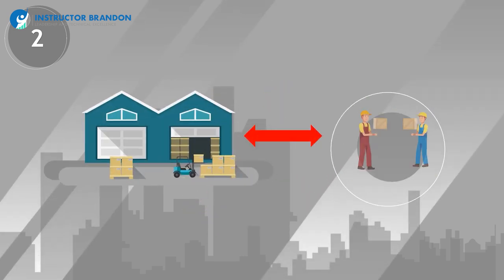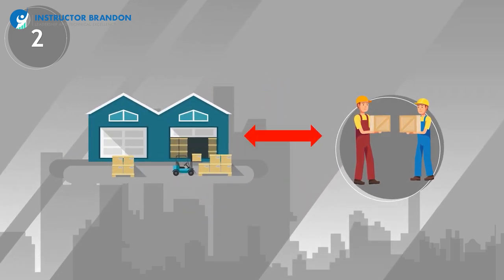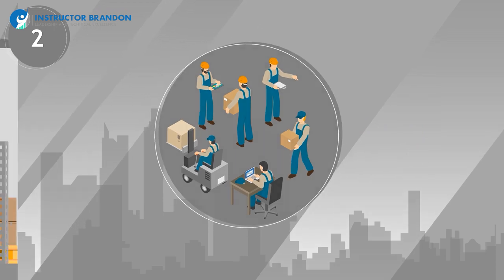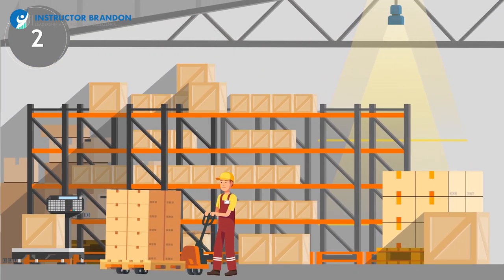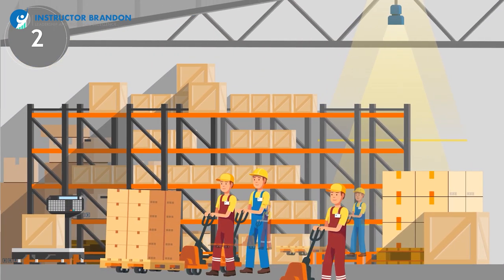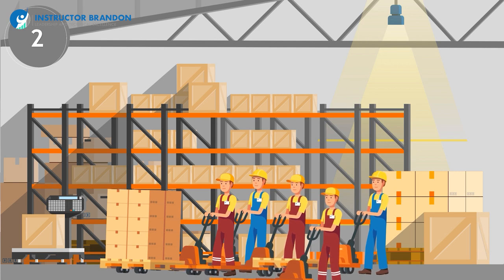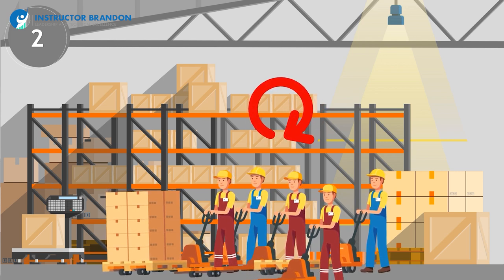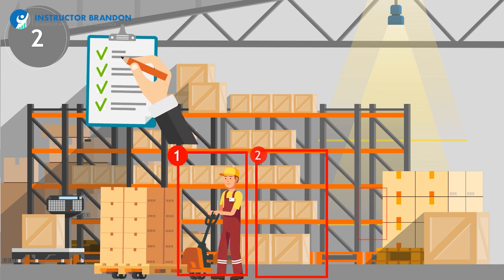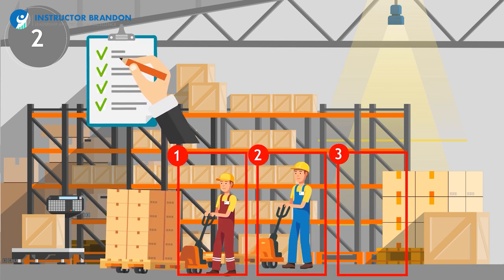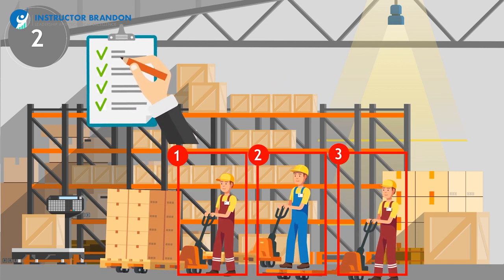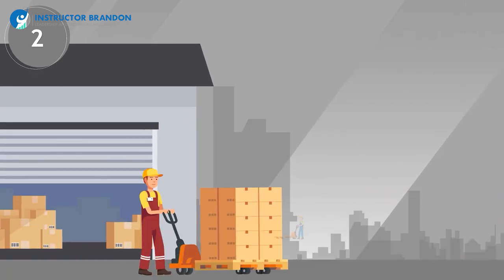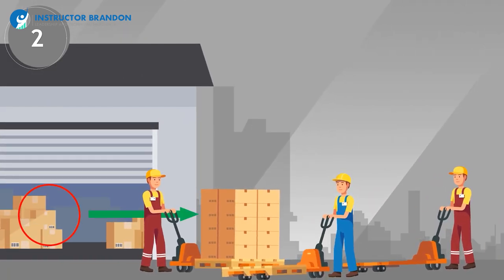Next, workers will need to schedule when they will be attending certain aisles to collect these items. This is because if all the employees go to the same category of item, it will cause congestion on the floor and slow down the picking process. This can be managed through a timetable or some sort of scheduling mechanism, delineating which workers pick and which workers access which area at which time.